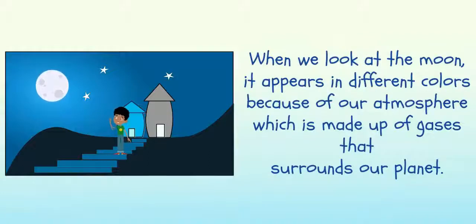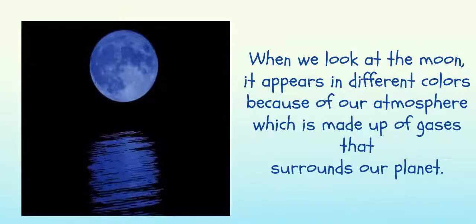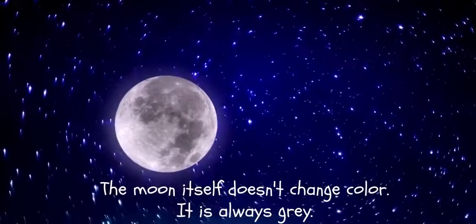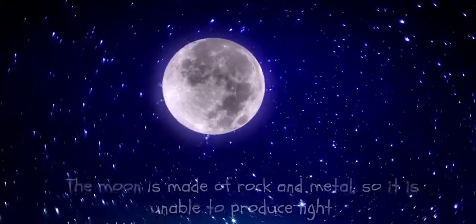When we look at the moon, it appears in different colors because of our atmosphere, which is made up of gases that surround our planet. These gases can change what things look like. The moon itself doesn't change color—it is always gray.